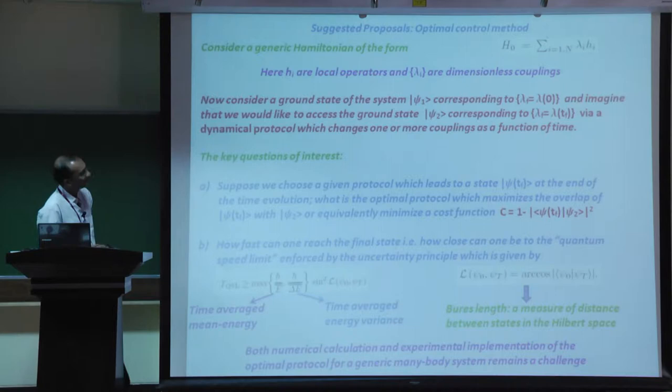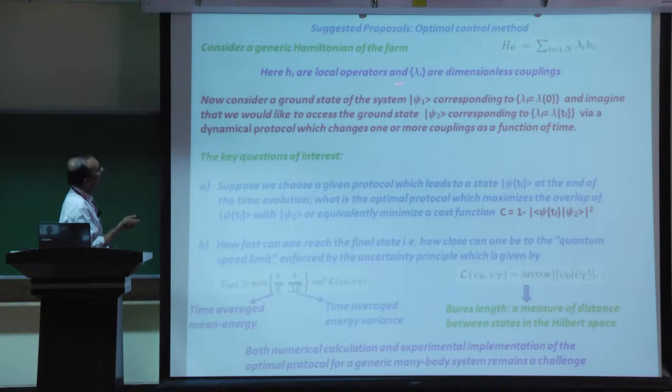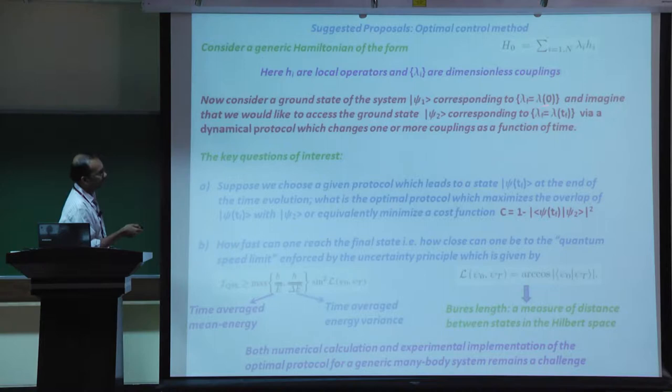The second approach people talk about is the optimal control method. They consider a generic Hamiltonian of the form where h_i are local operators and lambda is a dimensionless coupling. The idea is to consider a ground state corresponding to some values of parameters lambda_i, and imagine wanting to access another ground state psi_2, which is the ground state for some final values of these parameters.